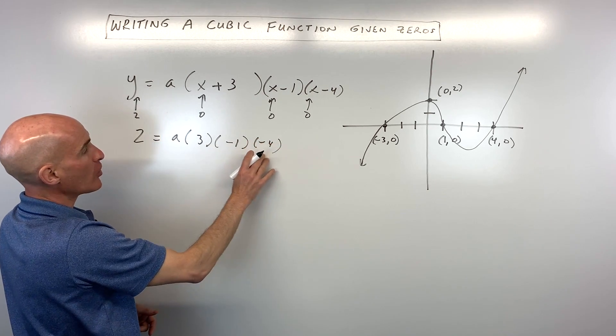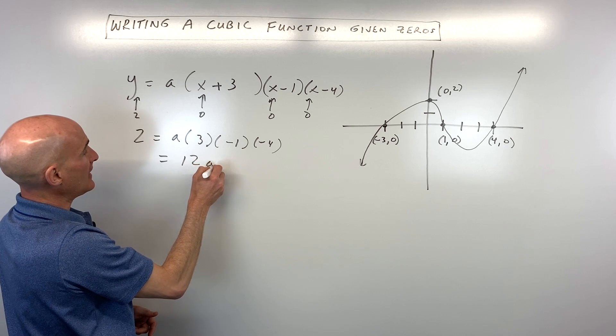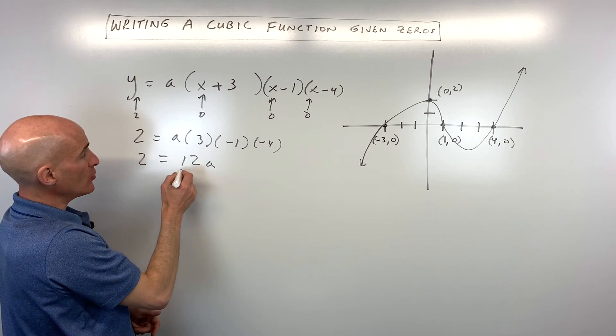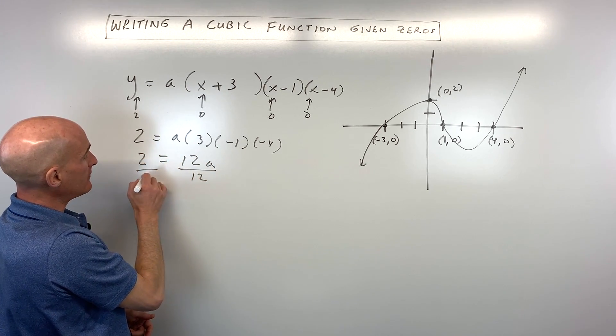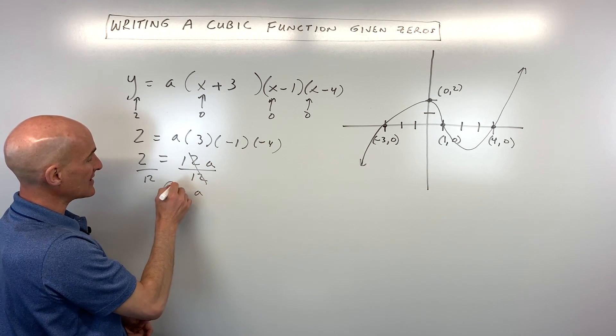So we have two equals a, zero plus three is three, zero minus one is negative one and zero minus four is negative four. If we multiply that together we get positive twelve a equals two and if we divide both sides by twelve to get a by itself you can see that a is equal to one-sixth.